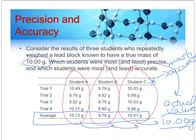Who was the least accurate — the farthest away? Student A is off by 0.13 grams and student B is off by 0.21 grams. So student B is the least accurate.